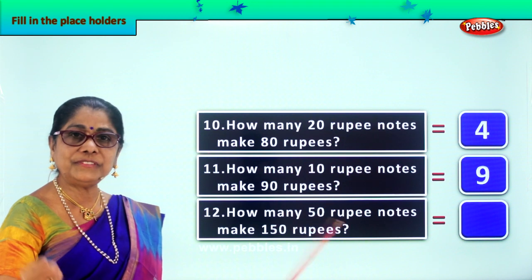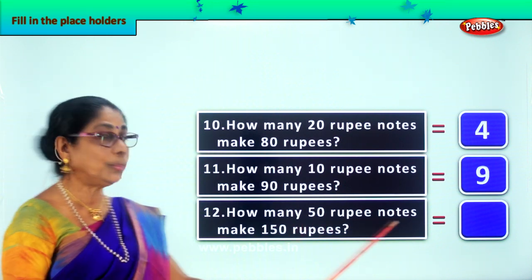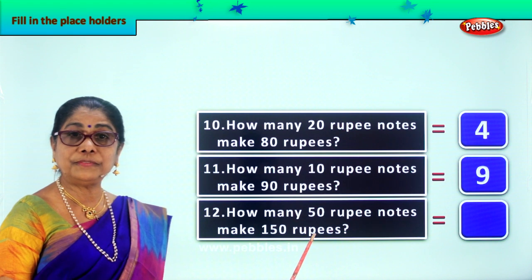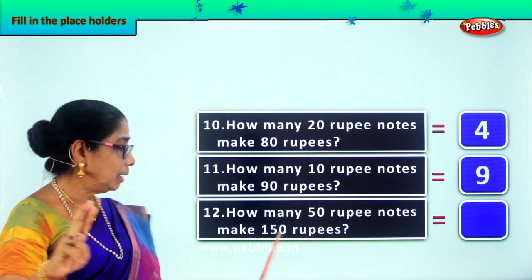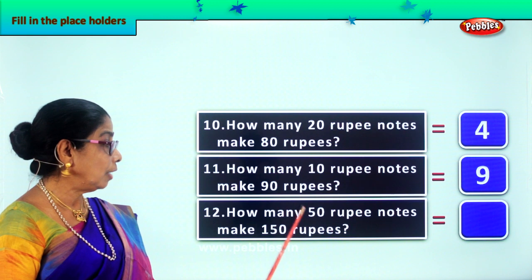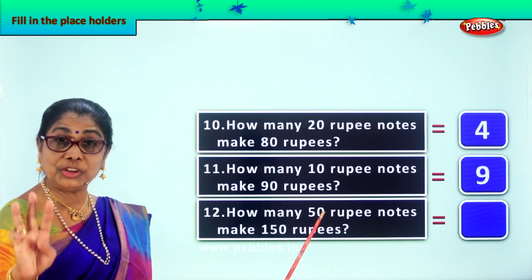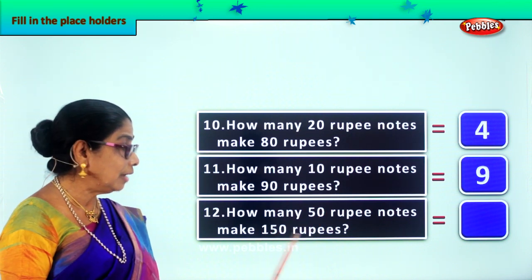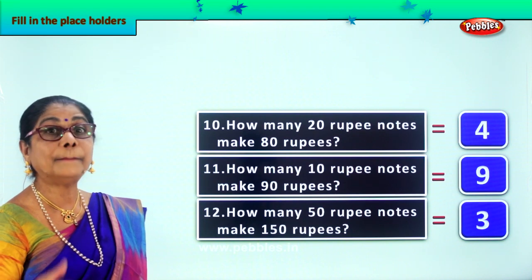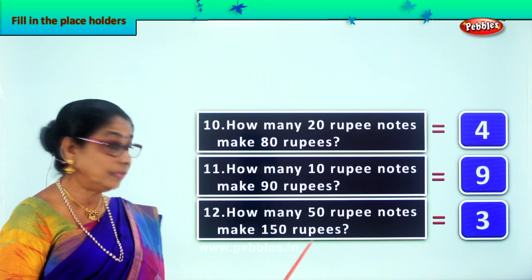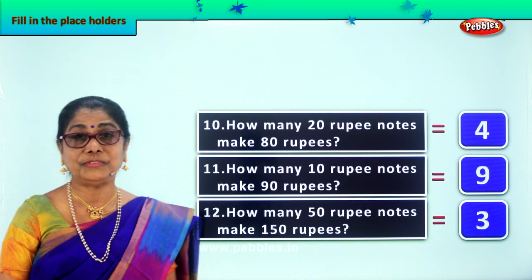How many 50-rupee notes? What's the color of 50-rupee notes? Lovely blue color. How many 50-rupee notes make 150 rupees? One 50-rupee note makes 50, another makes 100, and another makes 150. This is the 5 times table — 5 threes are 15, so 50 times 3 is 150. We need 3 fifty-rupee notes to make 150 rupees.